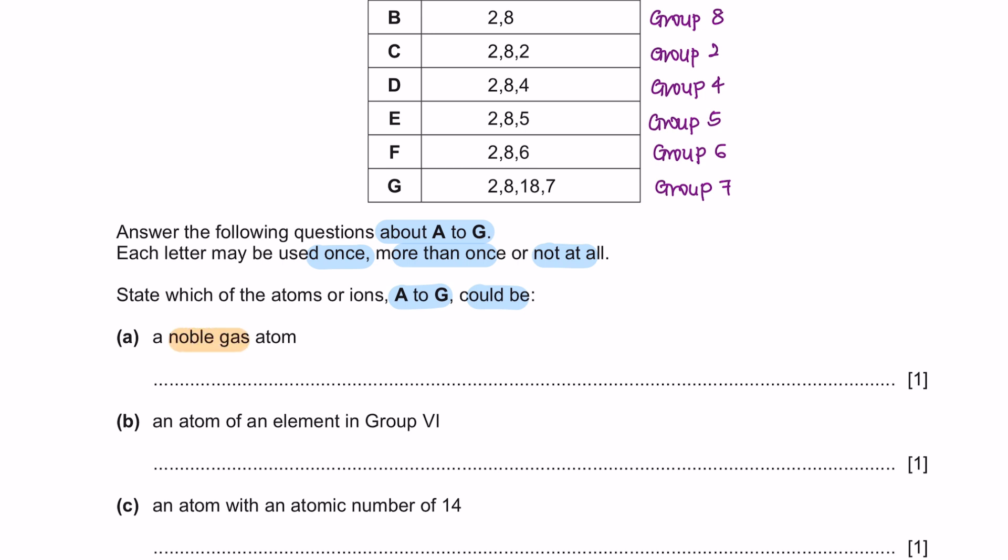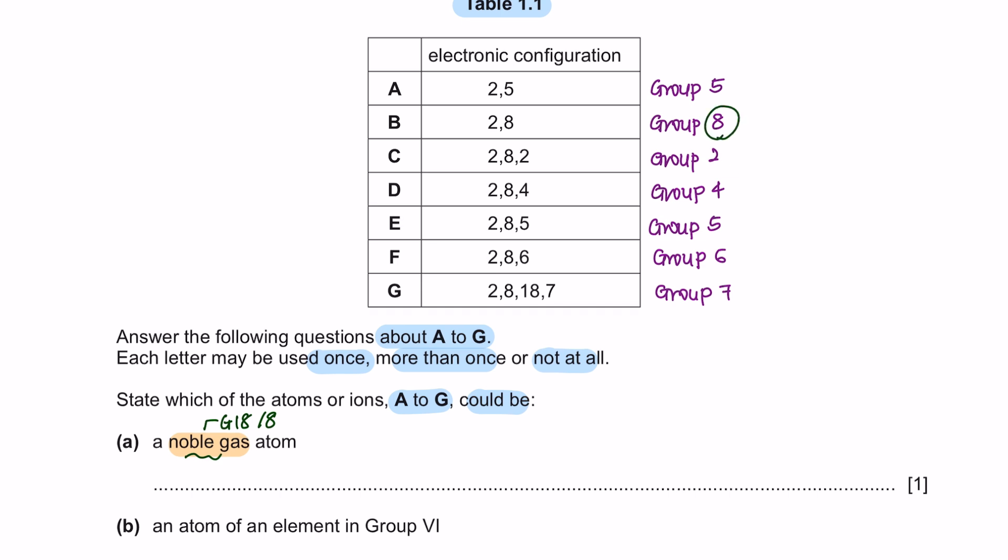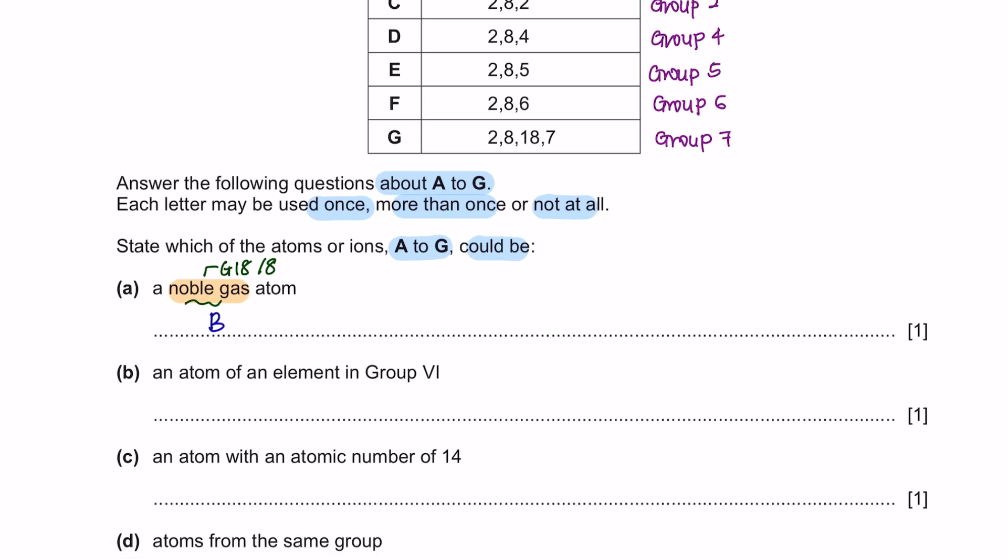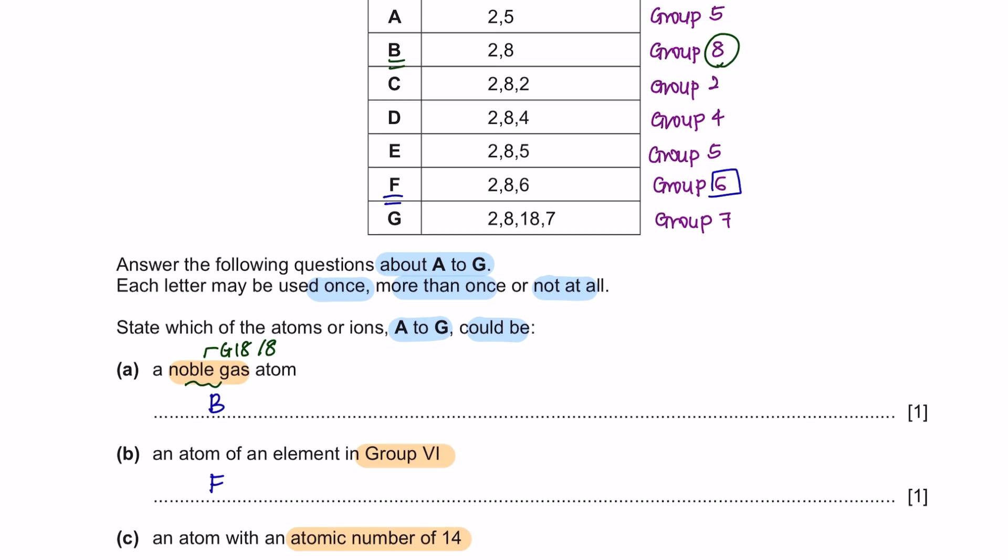Question A: a noble gas atom. Noble gases are from group 18 or known as group 8. So group 8 is atom B. Next, an atom of an element in group 6. Group 6 is F. Question C: an atom with an atomic number of 14. To get the atomic number, we'll add up all the electrons that are present in the atom, and we will get 14 for atom D.